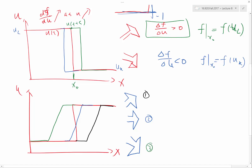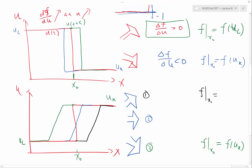Let's look at Case 3 first. This is my U L and this is my U R. What is the flux at x0, the original location of the discontinuity, after some time? For Case 3, the flux is F of U R, because the solution here is U R. For Case 1, the entire thing is moving towards the right, so F is F of U L. The only tricky case is Case 2.